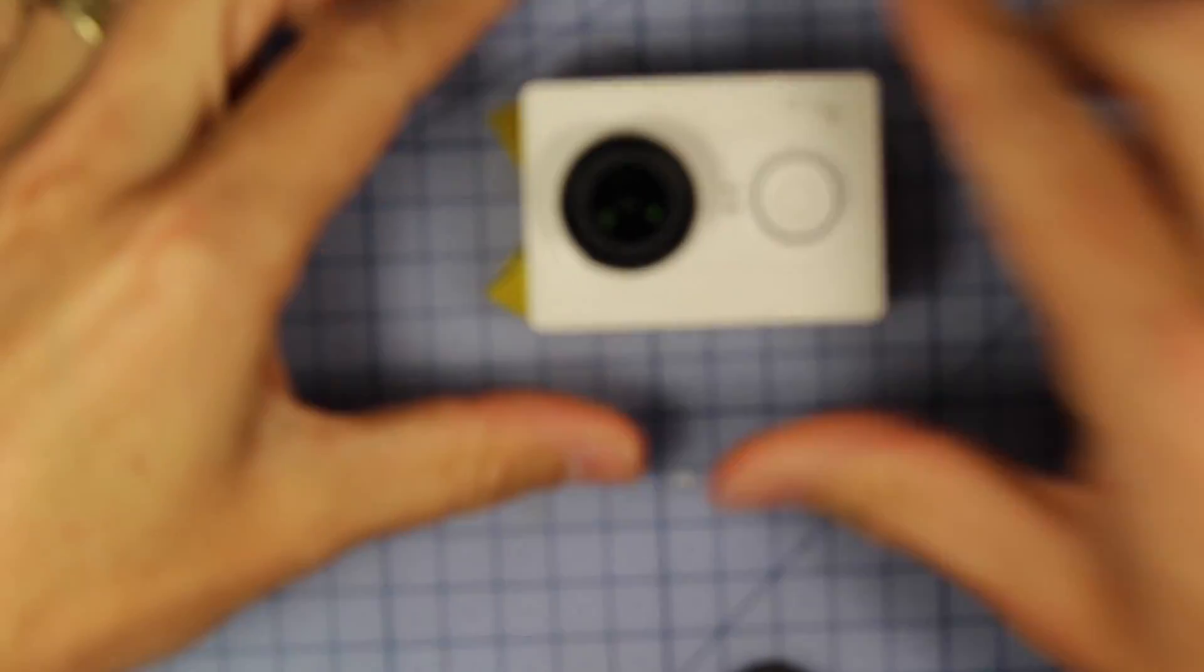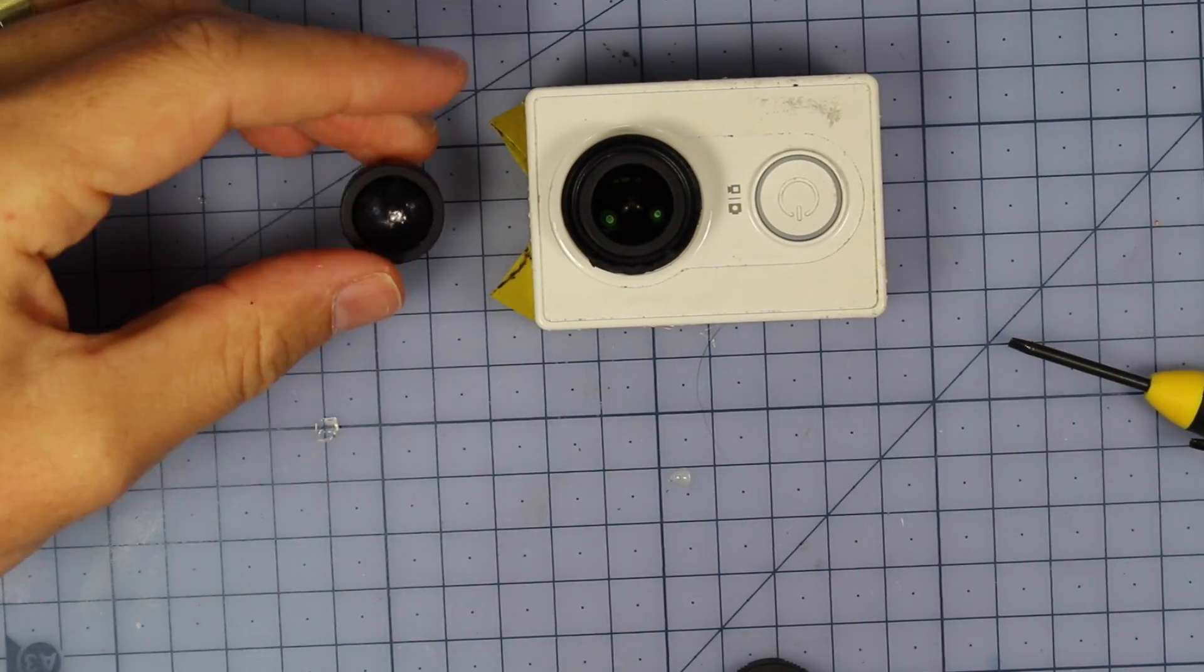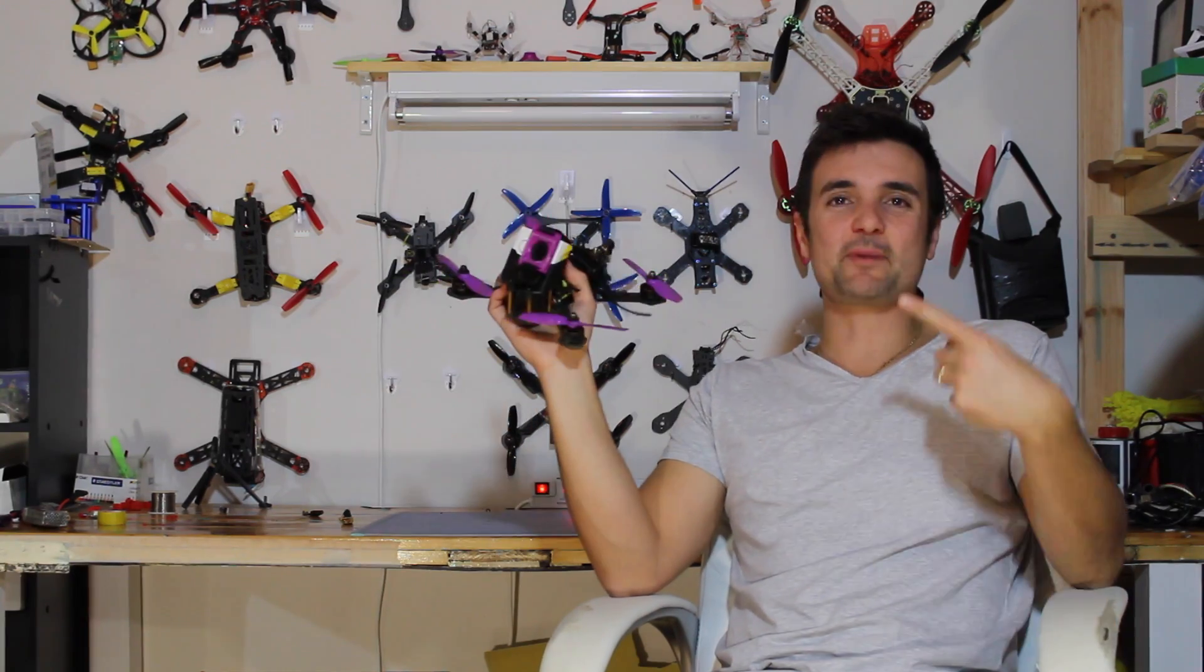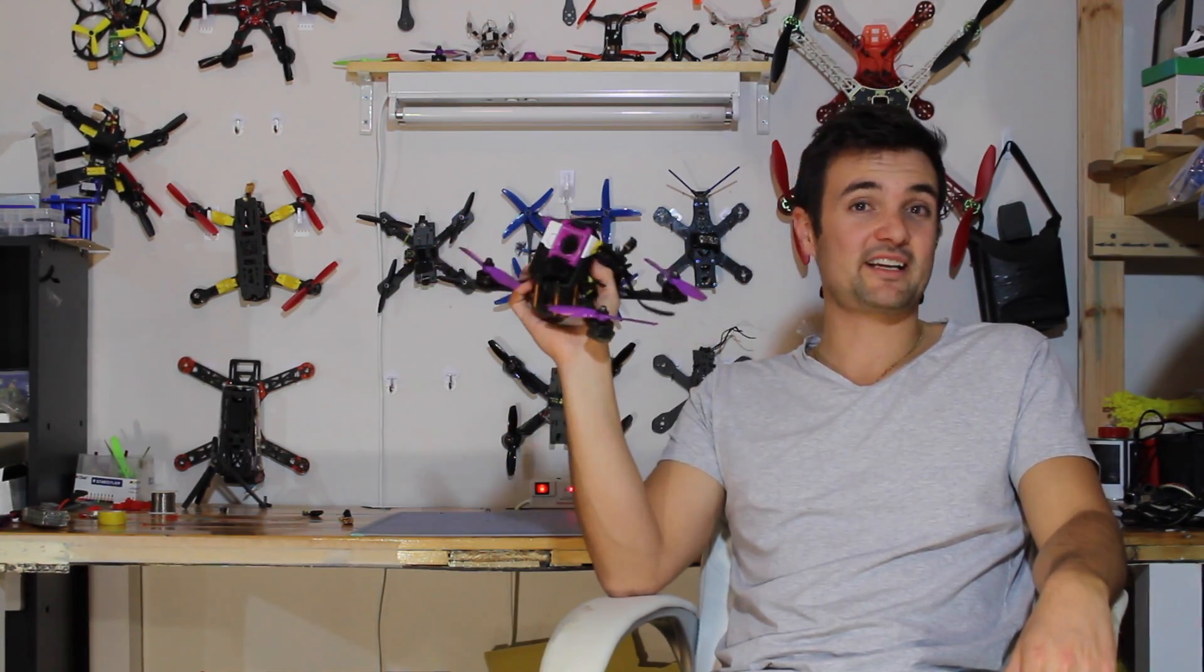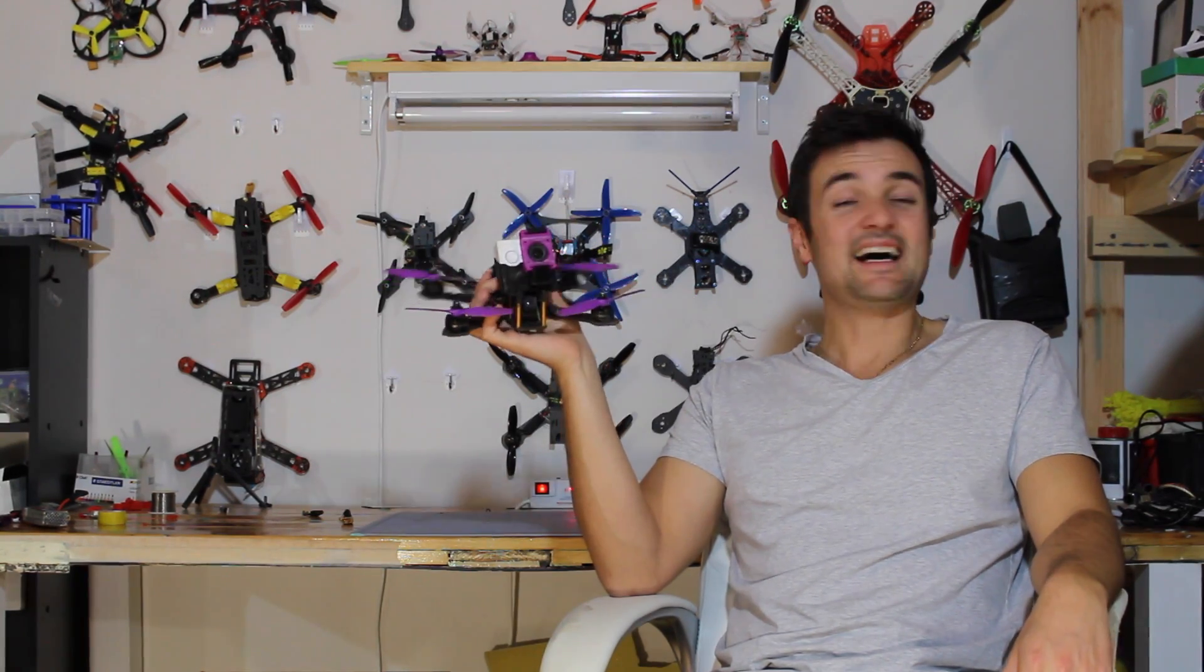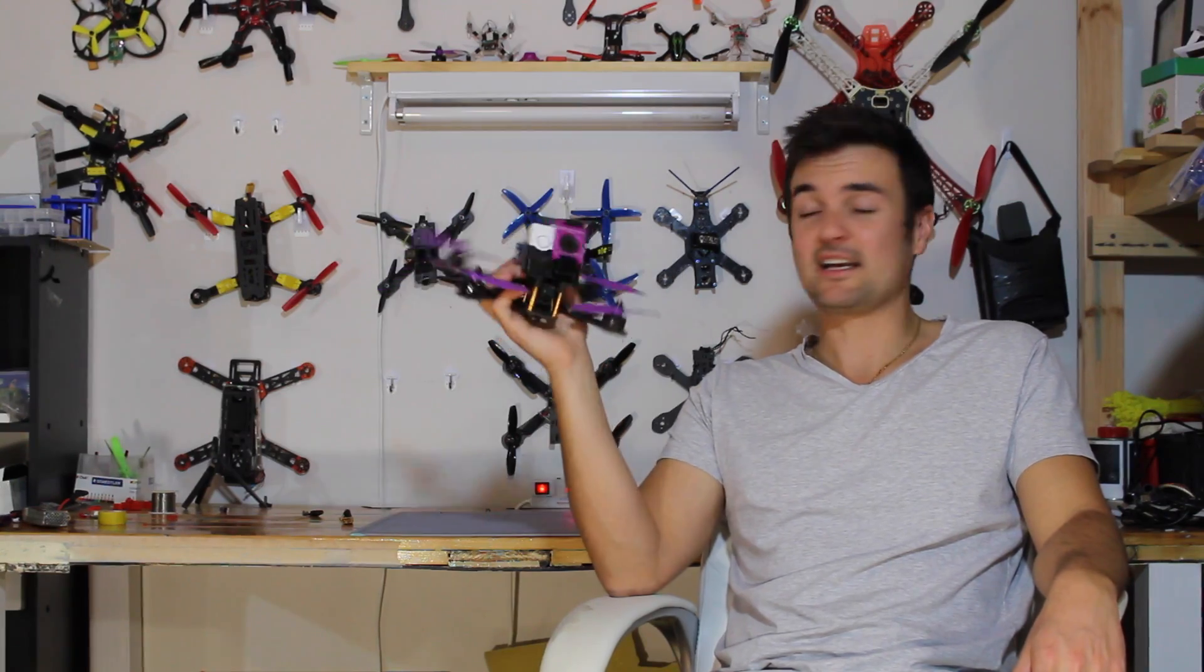Voila! There we go. So that's how easy it is to replace your smashed Xiaomi action camera lens. I've got to learn how to say that, honestly. So there's my guide on how to fix the smashed lens in your Xiaomi action camera. Hopefully that can save some of you guys some money out there. Subscribe for more FPV-related content. And as always, happy flying!